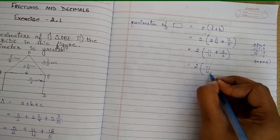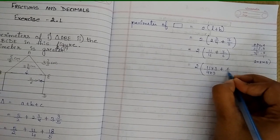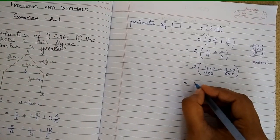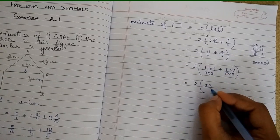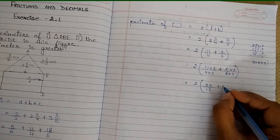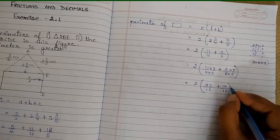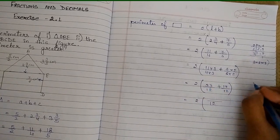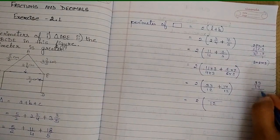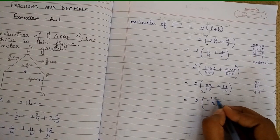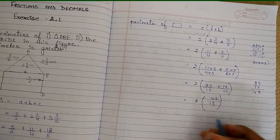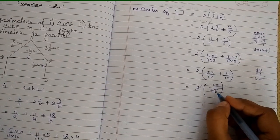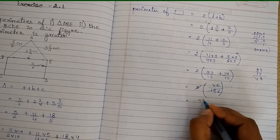For 11/4: 12 divided by 4 is 3, so multiply numerator by 3 — 11 times 3 is 33, over 12. For 7/6: 12 divided by 6 is 2, so multiply by 2 — 7 times 2 is 14, over 12. Adding numerators: 33 plus 14 is 47. So we get 47/12. Then 2 and 12 cancel — 12 divided by 2 is 6 — giving us 47/6. So the perimeter of the rectangle is 47/6.